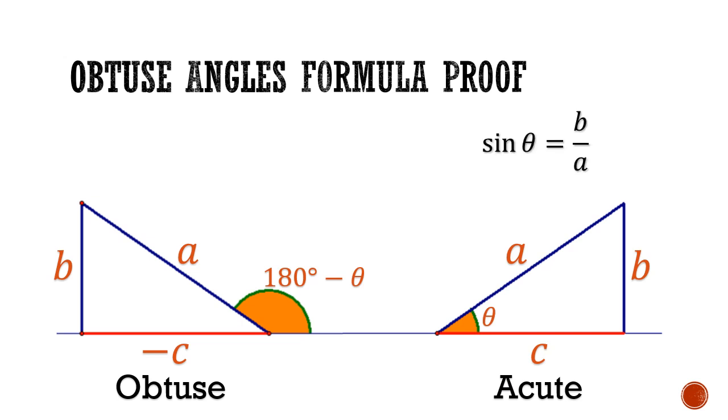What does this mean for the trigonometric ratios for obtuse angles? Let's first look at the sine ratio. Sine theta for the acute is opposite over hypotenuse, which is B over A. In the obtuse counterpart, it is also B over A. So we can say that sine 180 degrees minus theta is the same as sine theta.